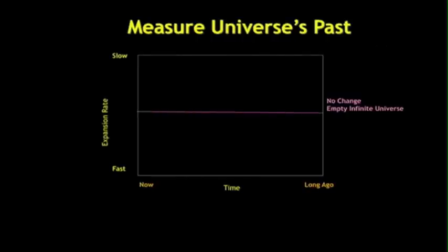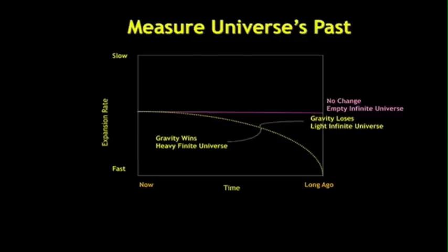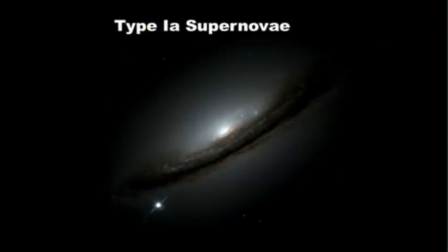So, when I moved to Australia in 1994, I decided I wanted to do something big. And measuring the ultimate fate of the universe was the biggest thing I could think of. And so, the idea is to literally look into the universe's past and recreate Hubble's experiment by looking far, far away, and therefore into the universe's distant past. Imagine a universe which is not slowing down. It's expanding the same in the past as now. Well, that universe is empty and infinite. On the other hand, a universe which is slowing down on this trajectory, gravity wins, the universe is heavy and finite. The other side of that line, it's infinite.